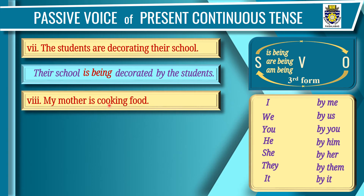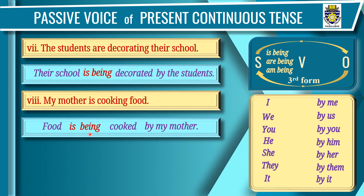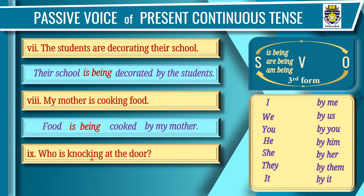Sentence 8: 'My mother is cooking food.' Subject: 'my mother'; verb: 'is cooking'; object: 'food'. Step one: write 'food' at the beginning. Step two: 'by my mother'. Step three: third form of 'cooking' is 'cooked'. Step four: 'food' is singular — write 'is being' — 'Food is being cooked by my mother'.